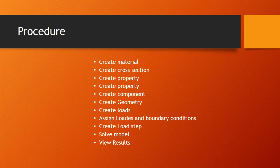Now we will see the procedure. First we have to create the material. Then the next step is to create the cross section, which is a solid rectangle having 100 by 100 dimensions. Then create the property, then the component, then the geometry, then create the loads, assign the loads and boundary conditions, then create the load step and solve the model. We will see this step by step.